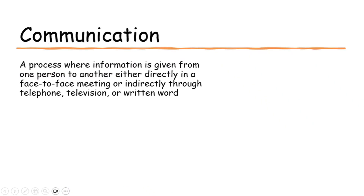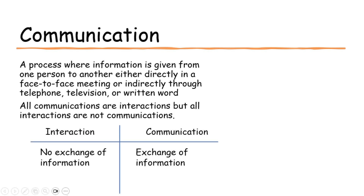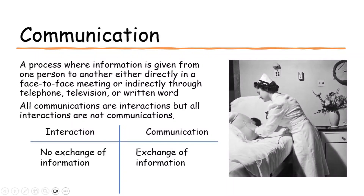Next is communication. King defines communication as a process whereby information is given from one person to another either directly in a face-to-face meeting or indirectly through telephone, television, or the written word. When there is an exchange of information, it's called communication. All communications are interactions, but there is one difference: there is an exchange of information in communication which is not necessary in interaction. For example, you are giving back care to a patient — there is an interaction but no communication. Suddenly the patient says there is an injury on my back, please be careful — it becomes an interaction as well as a communication.